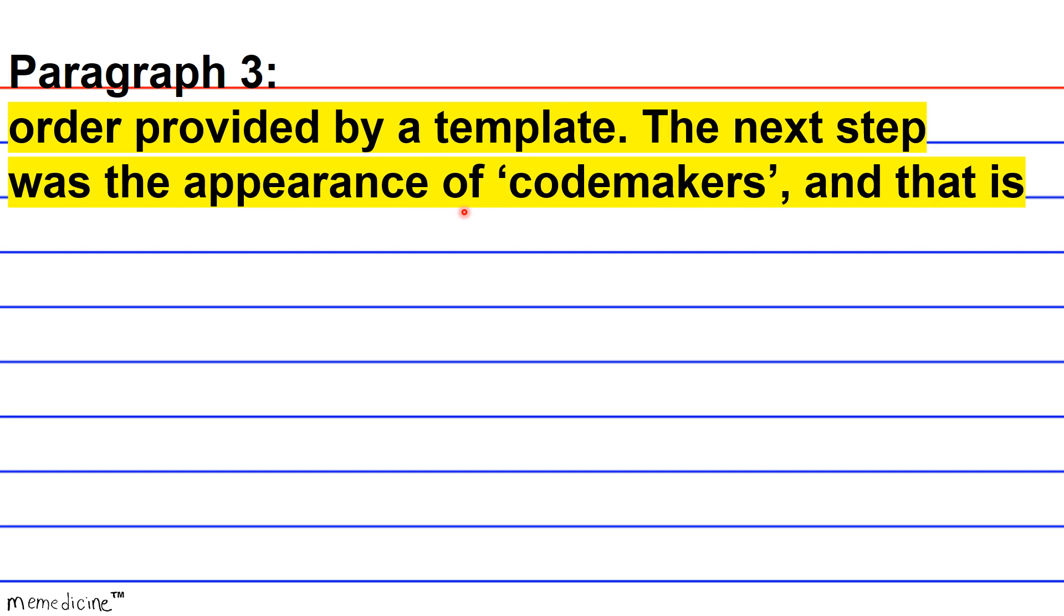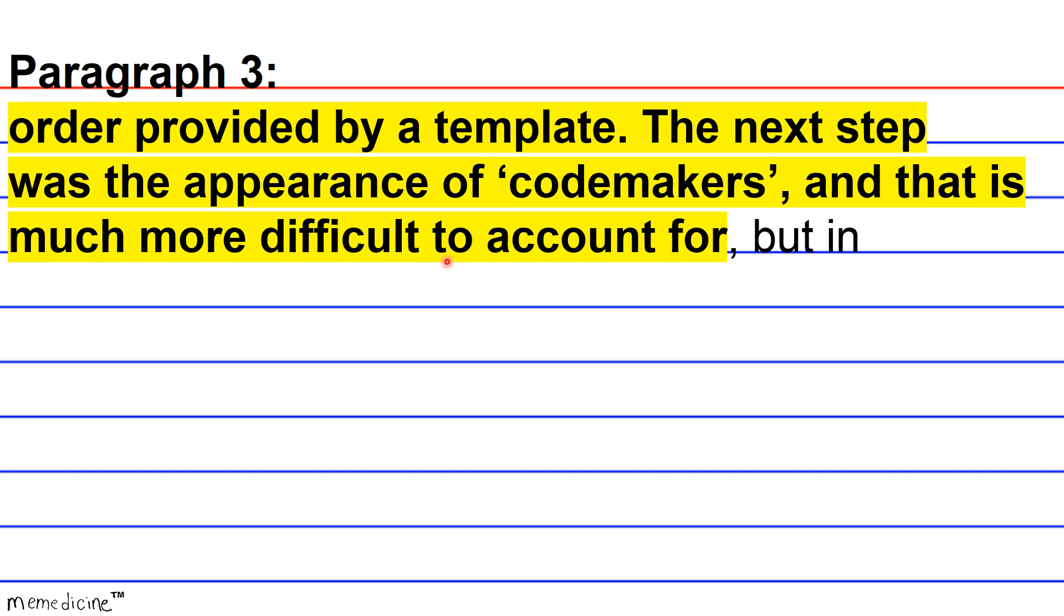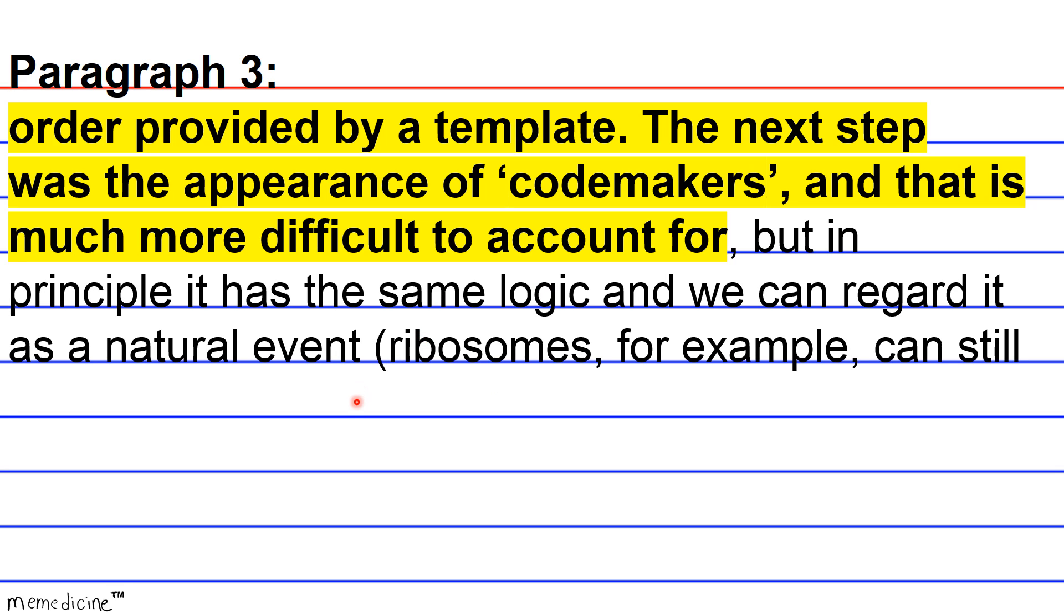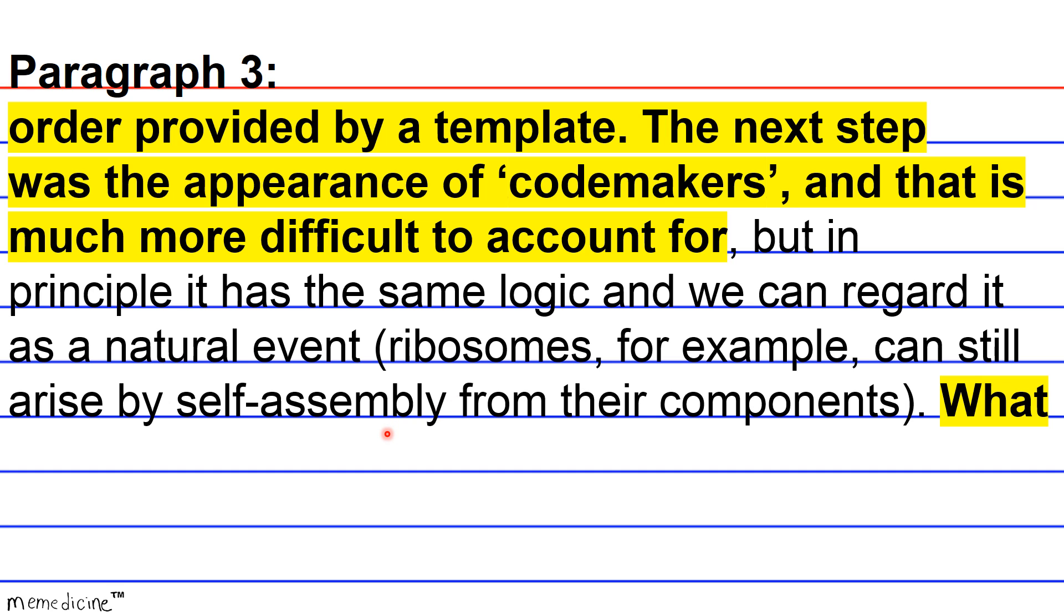The next step was the appearance of codemakers, and that is much more difficult to account for. But in principle, it has the same logic, and we can regard it as a natural event. Ribosomes, for example, can still arise by a self-assembly from their components.